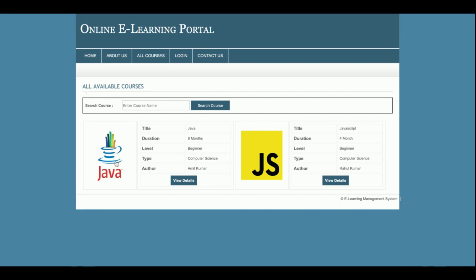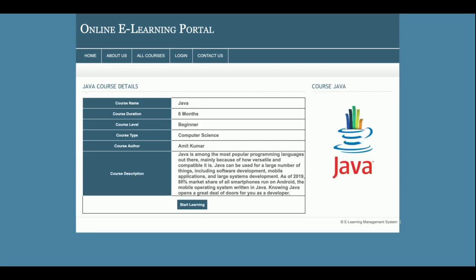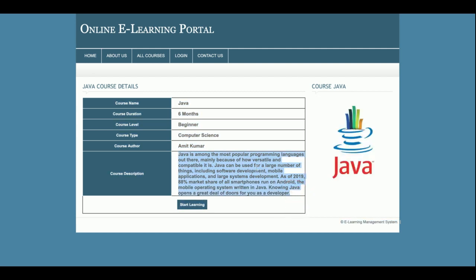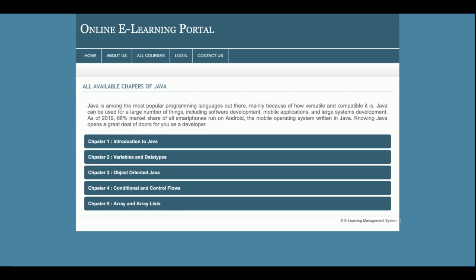Once you click on the image or the view detail section, you will be able to see the details of the course — for example, a Java course with a duration of six months, level beginner, subject computer science, and course author Amit Kumar, along with a course description. Click on Start Learning to see all the chapters.